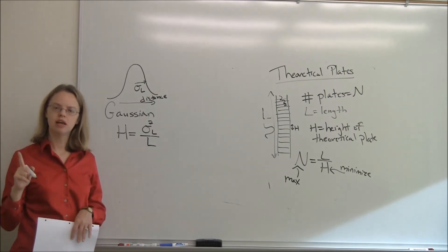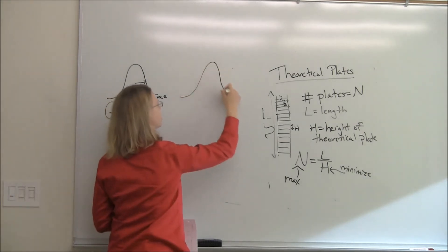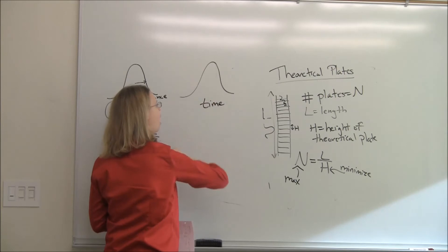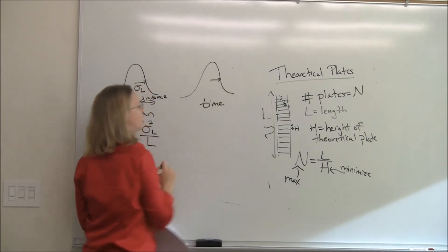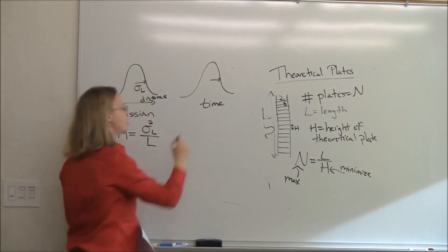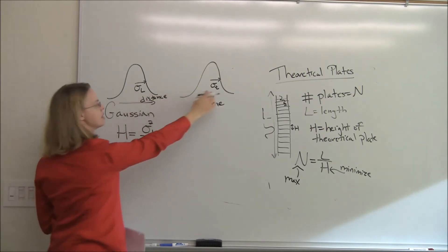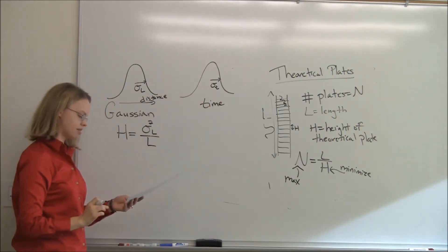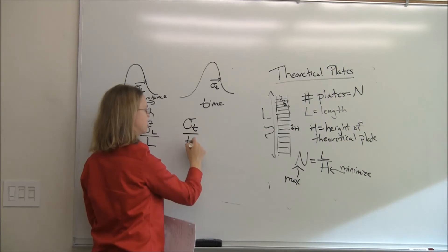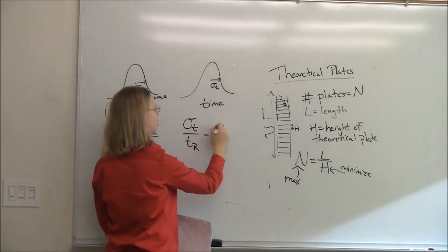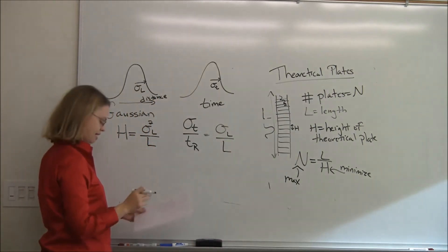There's one problem with this definition: when we draw a chromatogram, the x-axis is time, not distance. The peak we measure is still Gaussian, but now we have a sigma in time units rather than distance. There's an equivalence you can derive: sigma_t over T-sub-R equals sigma_L over L. So we can convert back and forth between time and distance domains.